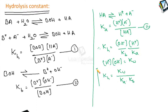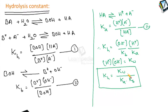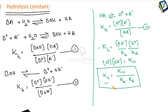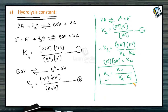So the hydrolysis constant KH for a salt of weak acid and weak base is given by KH = KW / (KA × KB). Here KW is the ionic product of water, which is always constant — at 25°C it is 10⁻¹⁴. If the KA and KB values are known, it is possible to find the value of KH, the hydrolysis constant for a salt of weak acid and weak base.